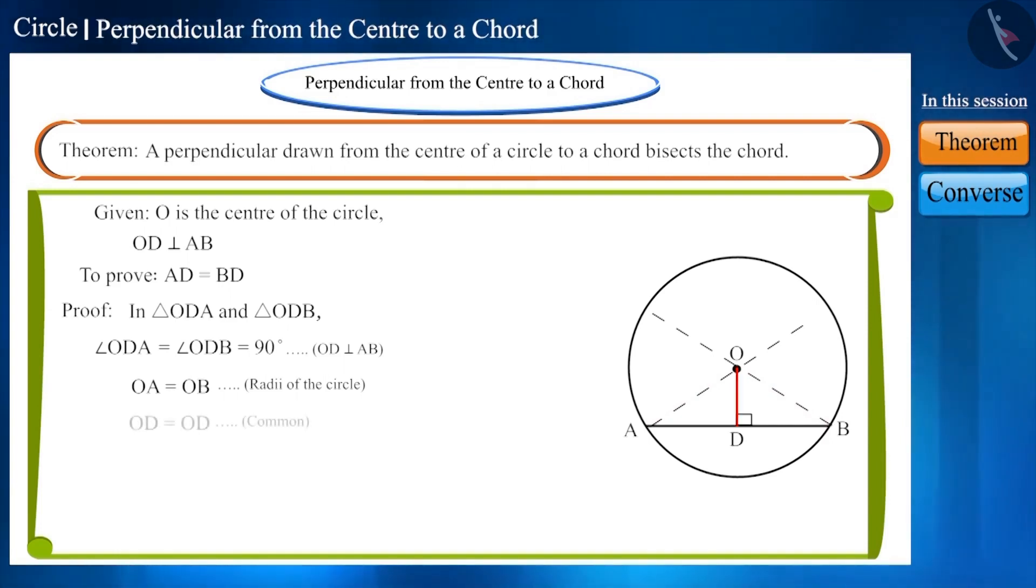Friends, you can see that OD is the common side. Therefore, these two triangles are congruent according to the right angle hypotenuse side or RHS congruence rule.